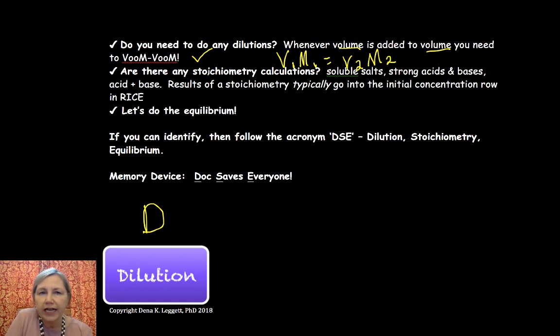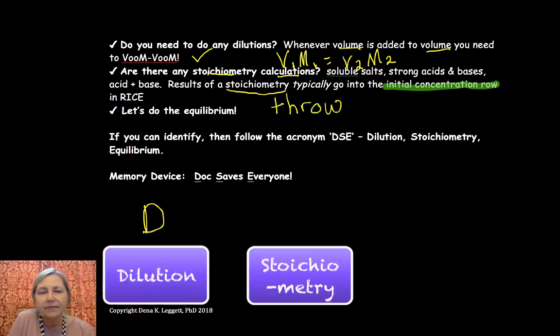You want to ask yourself, are there any stoichiometry calculations? And that's going to be dealing with what we talked about above. Stoichiometry values, this is key, will typically be put into the initial concentration row if we're dealing with an equilibrium problem. So pay close attention to that. The other thing you want to learn to do for that stoichiometry is throw off spectator ions.